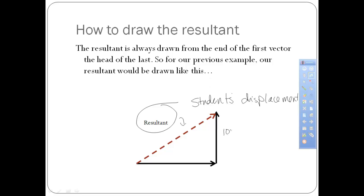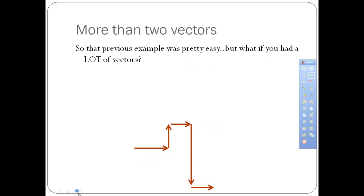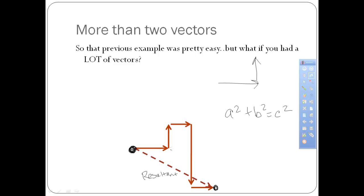To actually solve for your resultant, hopefully you can see that this is a right triangle, and we would need to use the Pythagorean theorem to figure out the actual magnitude of my resultant. The direction we're going to talk about in a little bit. That previous example was straightforward because there were only two vectors, but what if you had a lot? If your journey was composed of a bunch of different vectors, you still draw your resultant from the tail of your first to the head of your last vector. Finding this resultant mathematically isn't as easy as a² + b² = c², but we can do it with some geometry.